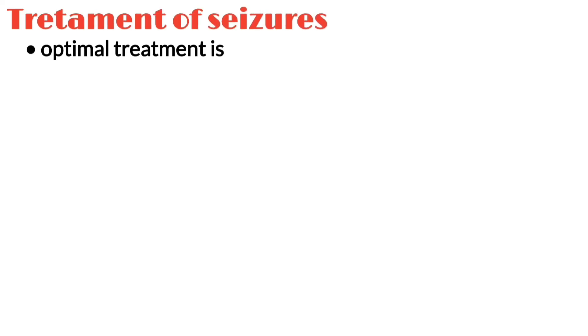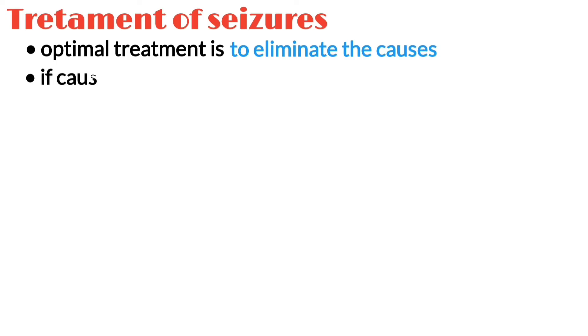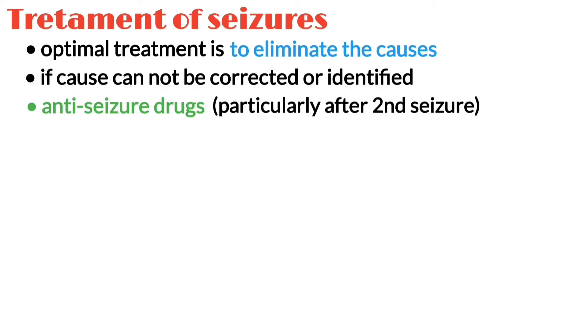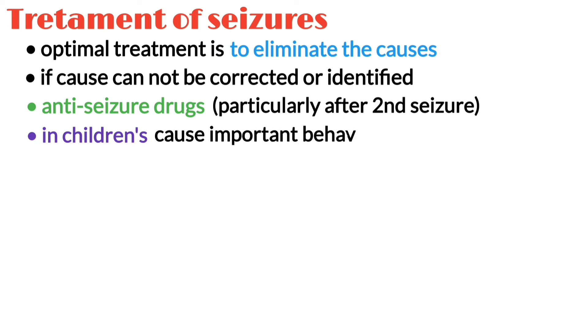The optimal treatment of seizures is to eliminate the cause whenever possible. If the cause cannot be corrected or identified, anti-seizure drugs are often required, particularly after a second seizure. In children, certain anti-seizure drugs can cause important behavioral and learning problems.